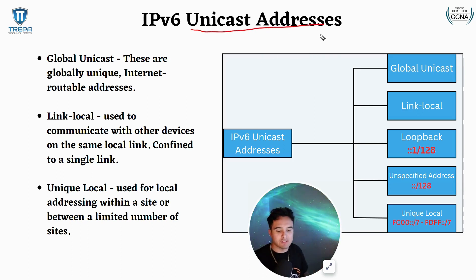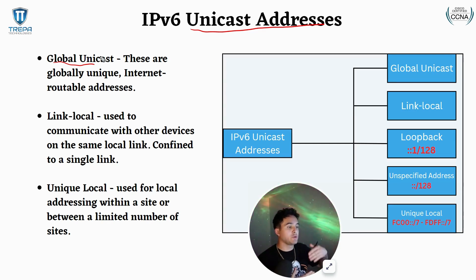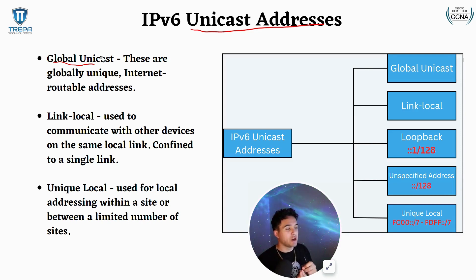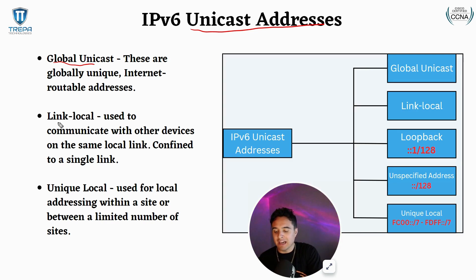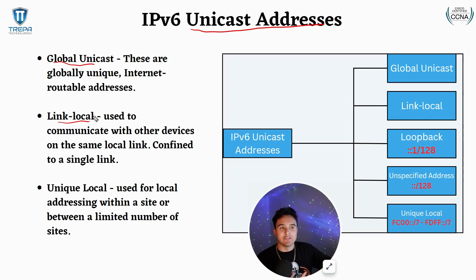The first unicast type we'll touch on is a global unicast. These are the globally unique and routable addresses that we are able to route on the internet. Unlike IPv4, we don't really have that concept of public and private — we just have global unicast and link local, which kind of function the same way, but we don't need to translate link local to do internet connectivity.